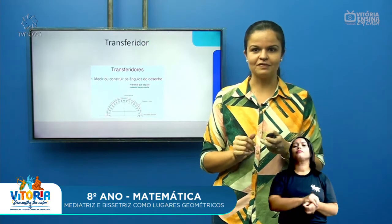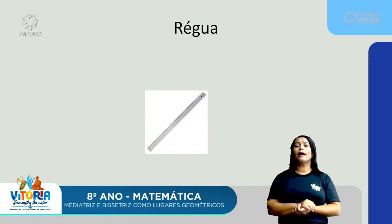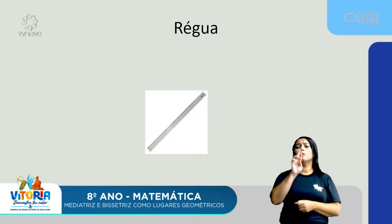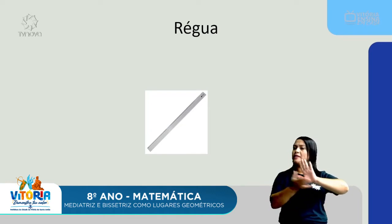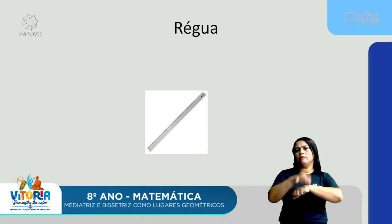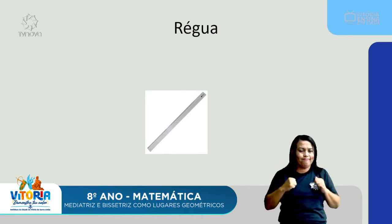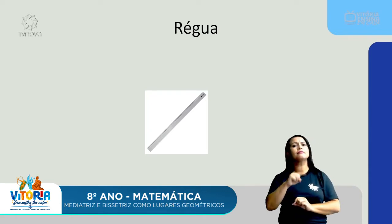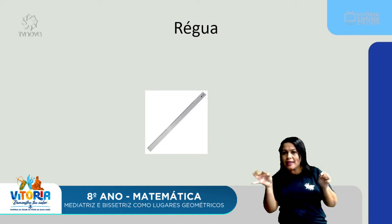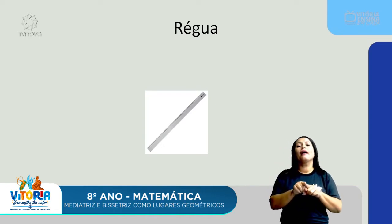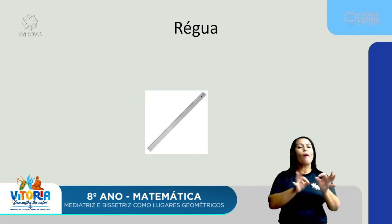Além do transferidor, nós temos as réguas. Eu trouxe aqui a imagem de uma régua normal, que praticamente todos vocês têm aí dentro da bolsa. E essa régua, ela serve para quê? Ela serve para a gente construir as retas, nossos segmentos de reta. Então, também é um objeto que nós usamos para construir os ângulos.